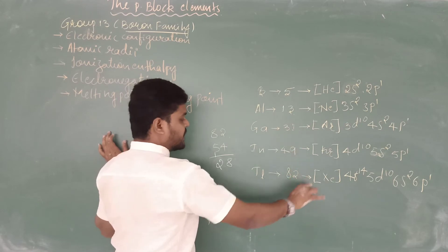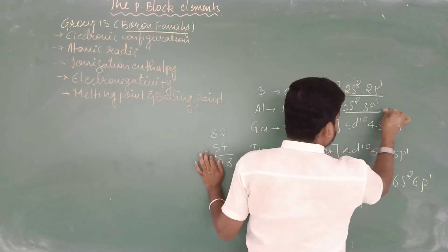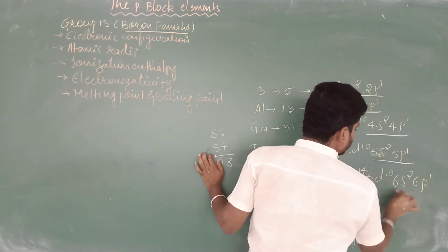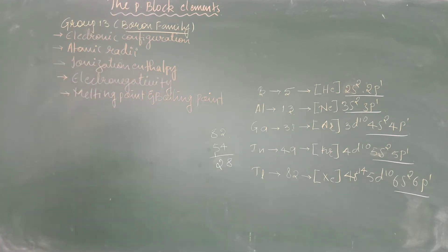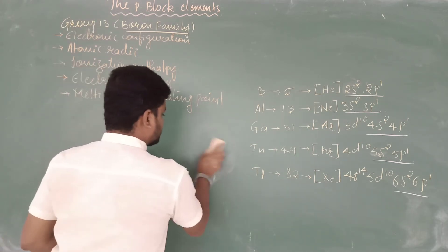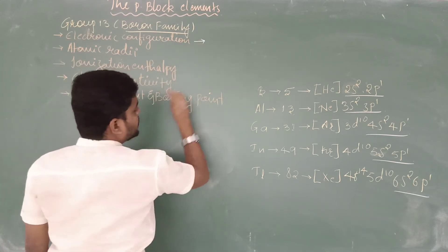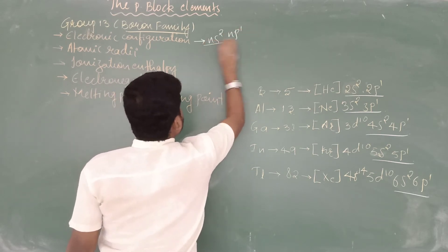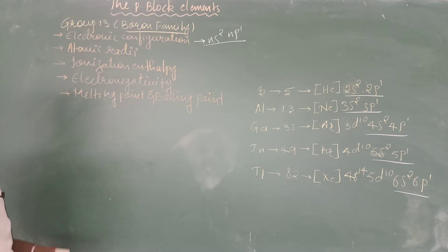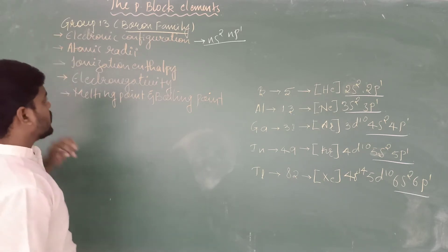So the 28 inner electrons are accounted for, and the valence shell configuration of thallium is 6s² 6p¹. Hence, the general valence shell electronic configuration of group 13 elements is ns² np¹, which is the general valence shell electronic configuration of the boron family.